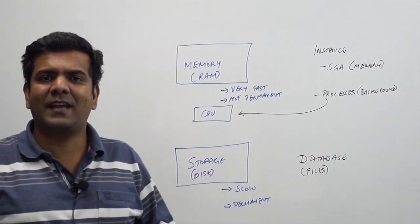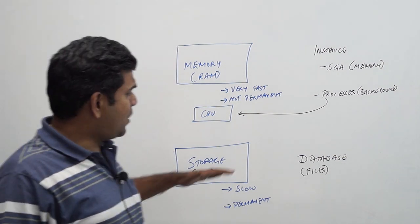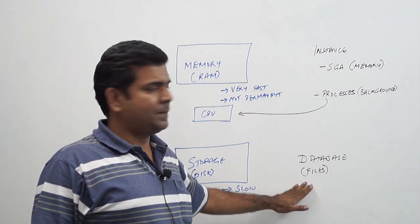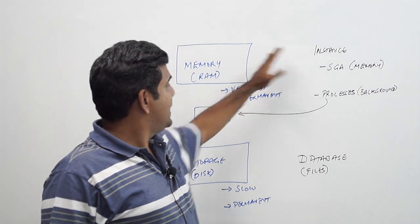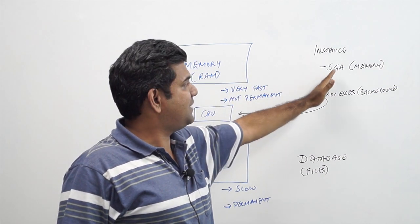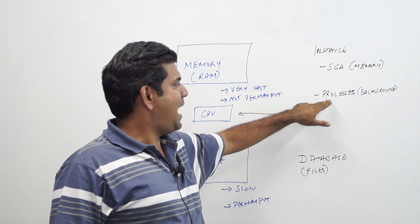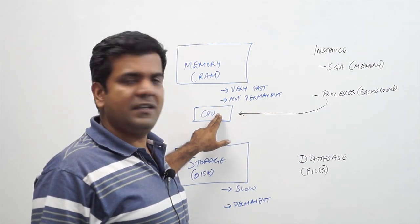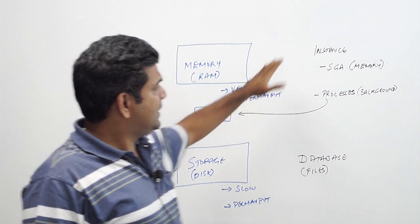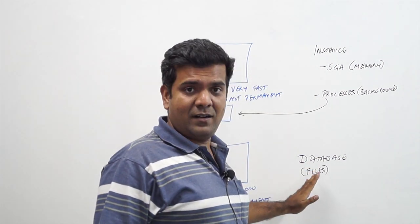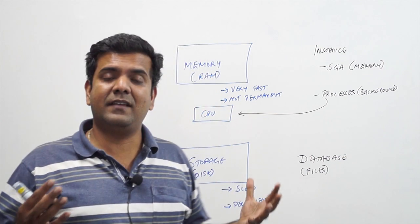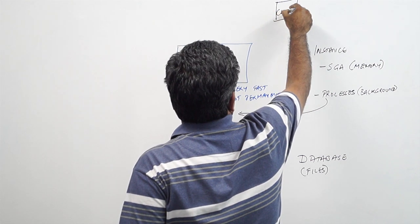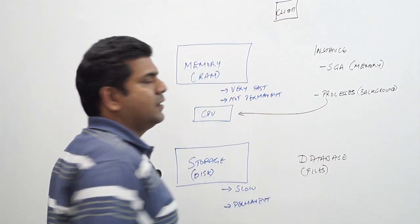So the database as we generally call is just a collection of files. The instance is the memory component which contains an SGA which is pure memory and a set of processes which enable the utilization of the CPU on the hardware. These components together form an Oracle database server to which a client can connect and work.